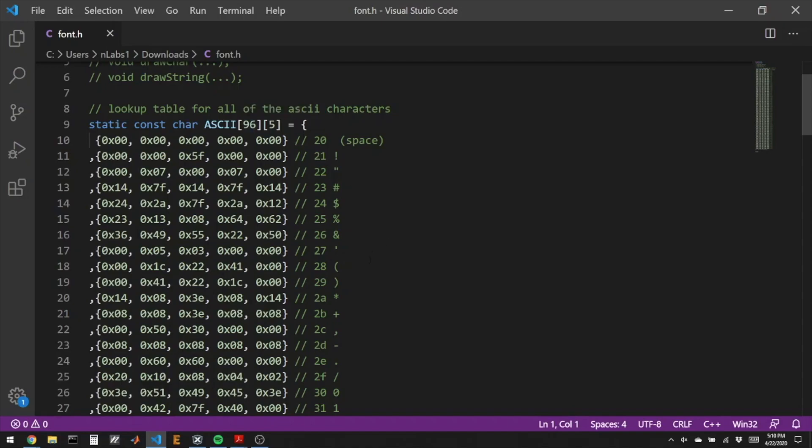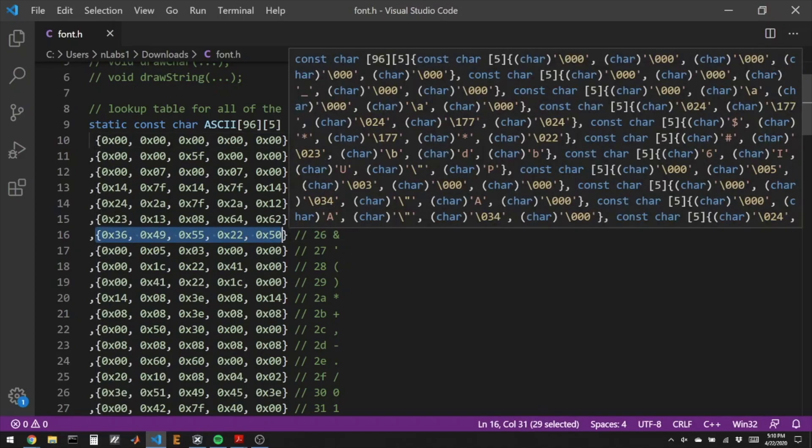So for instance if I am trying to draw the ampersand character that is 0x26 in ASCII. So these numbers in the comments here those are the hexadecimal version of these characters. So if I'm looking at ampersand, the ampersand is made of this set of pixels that will draw an image.